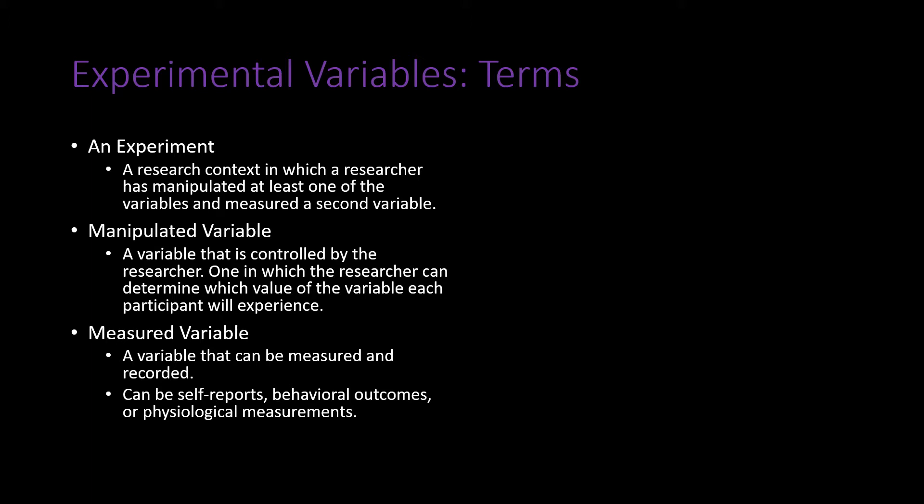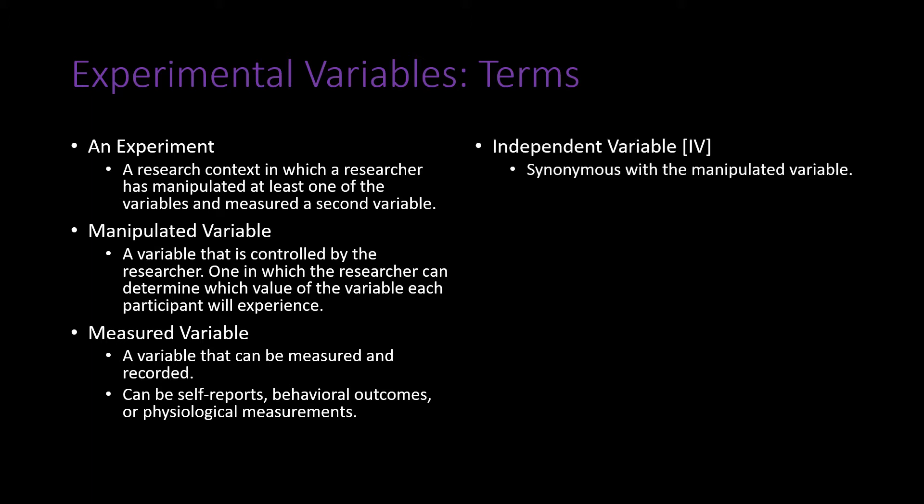Measured variables can consist of self-reports, behavioral outcomes, or physiological measurements — analogous to what we've discussed in previous chapters. The independent variable is often synonymous with the manipulated variable; it is the primary variable or variables that the experimenter is manipulating.